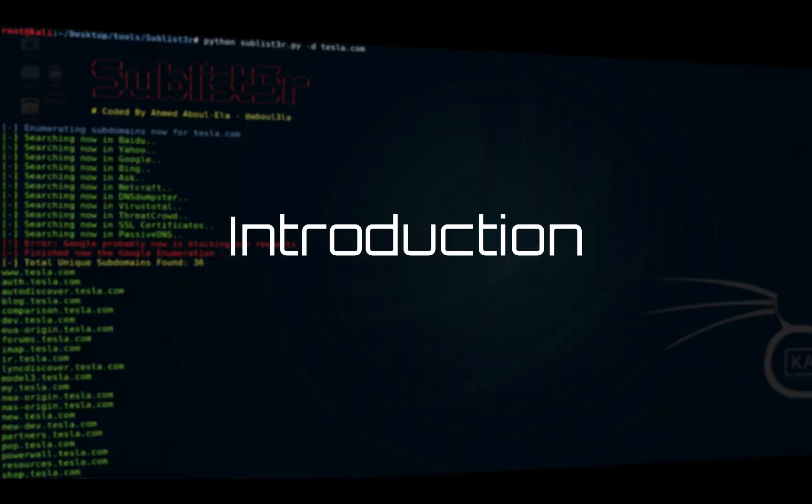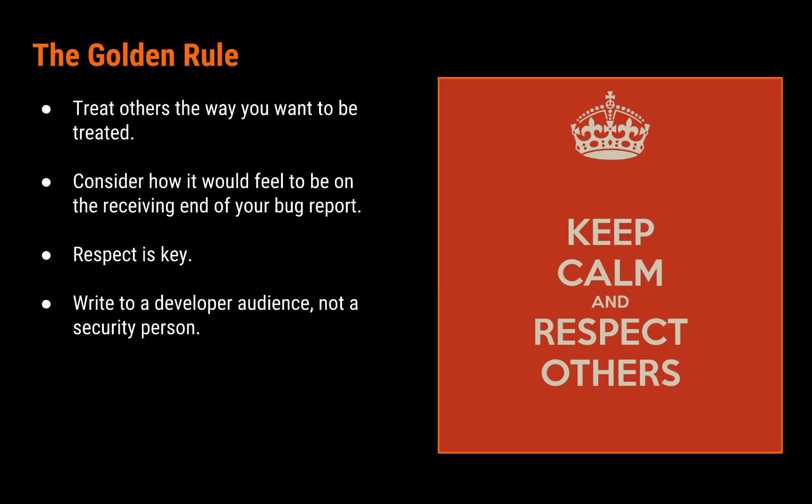Let's talk about why you should make a good submission and how it affects you as a bug hunter. Let's talk about the golden rule: treat others the way you want to be treated. The golden rule is an important rule to go by in your everyday life, and participation on a bug bounty program is no different. It's a two-way street. You as a security researcher report your bugs, and the analyst on the other side will triage and validate your bugs. You should always be respectful and professional in your interactions when reporting your bugs. Conduct yourself like you would when working a traditional job.